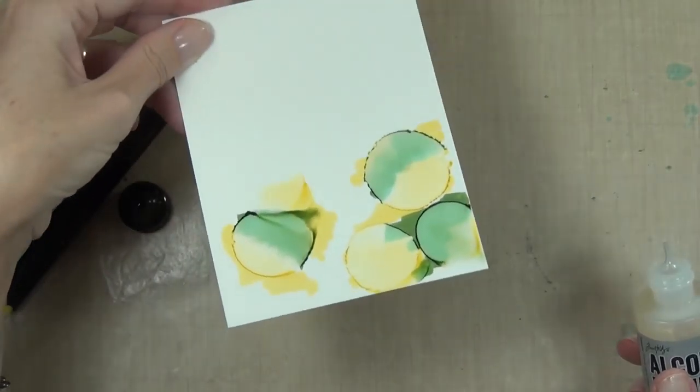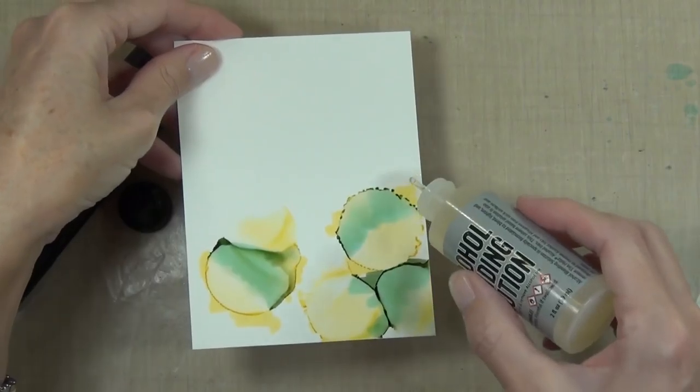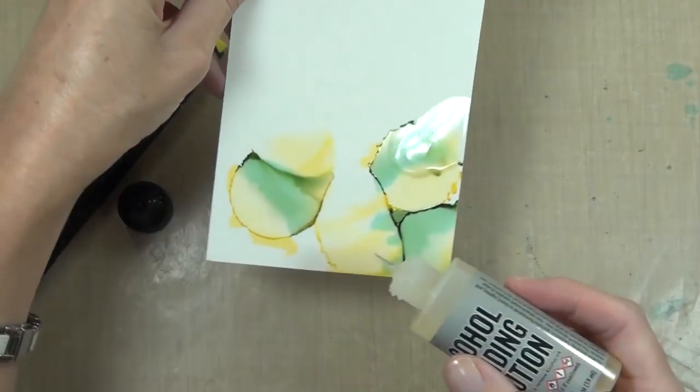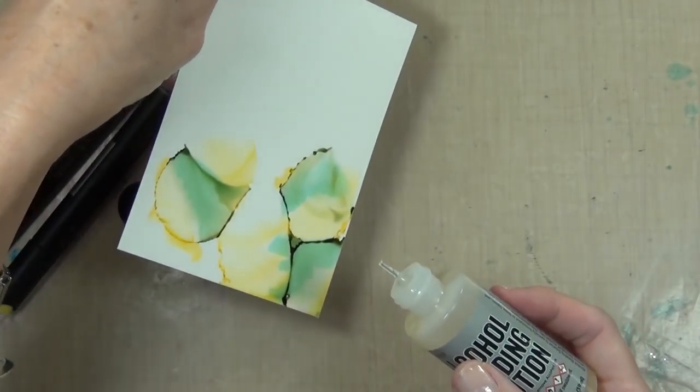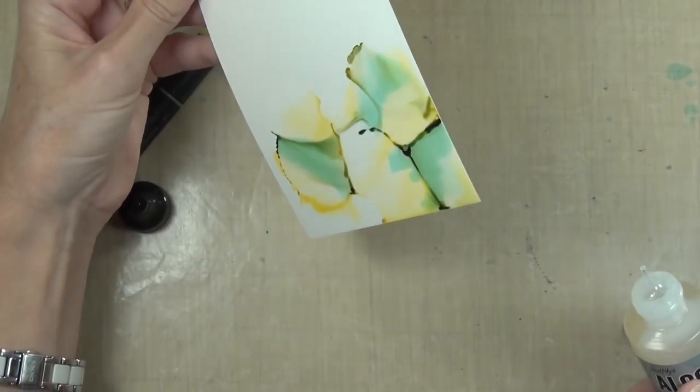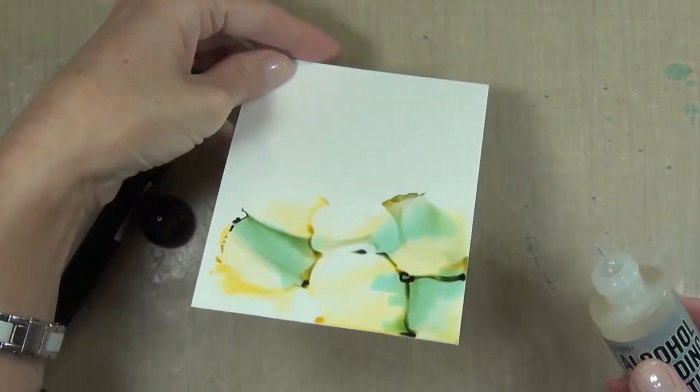And then I've got some blending solution. Now this stuff is awesome. What it does is it moves the color. So I didn't want the marks—because I don't have like re-inkers or any other way to add these colors to my cardstock—I just literally drew them on there and I'm using the blending solution to actually blend these colors.